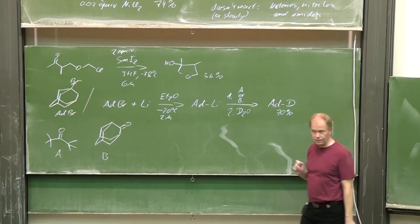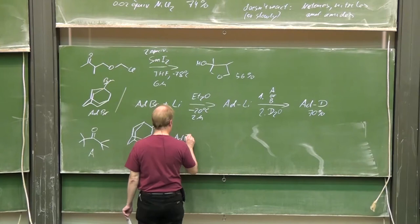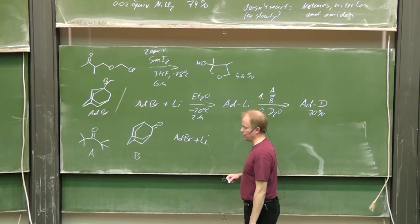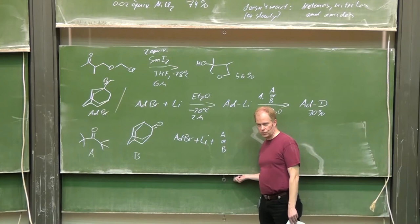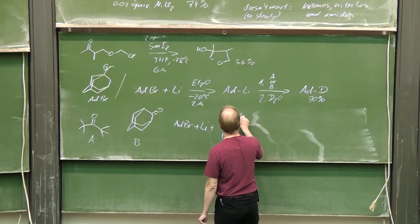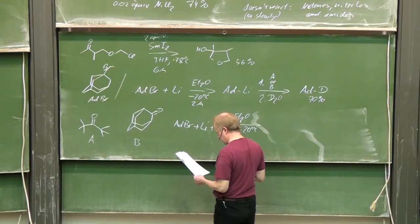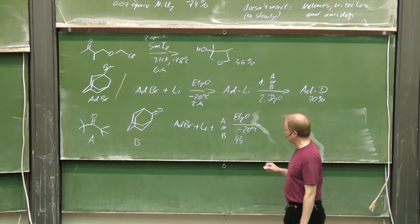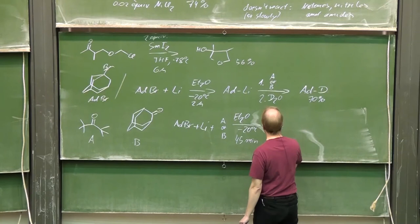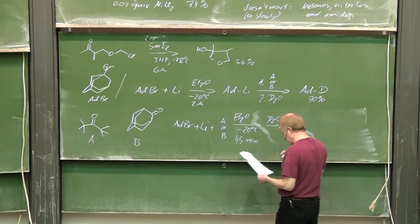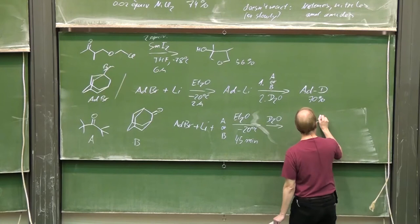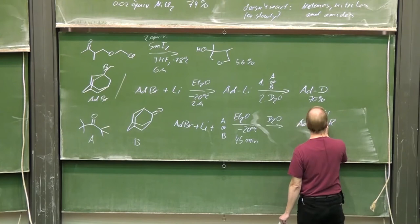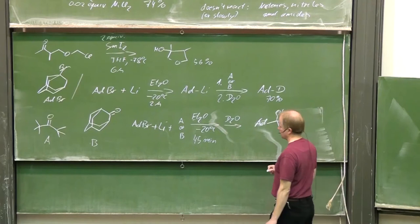Then they did the reaction once again. Almost the same setup, but they had A or B already present in the reaction mixture—a Barbier-type setup. Again, diethyl ether, minus 20 degrees, but they diminished the reaction time to just 45 minutes. Then adding D2O, and in this case they got the alcohol as main product.